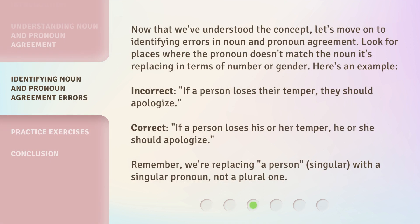Now that we've understood the concept, let's move on to identifying errors in noun and pronoun agreement. Look for places where the pronoun doesn't match the noun it's replacing in terms of number or gender. Here's an example. Incorrect: 'If a person loses their temper, they should apologize.' Correct: 'If a person loses his or her temper, he or she should apologize.' Remember, we're replacing 'a person' — singular — with a singular pronoun, not a plural one.